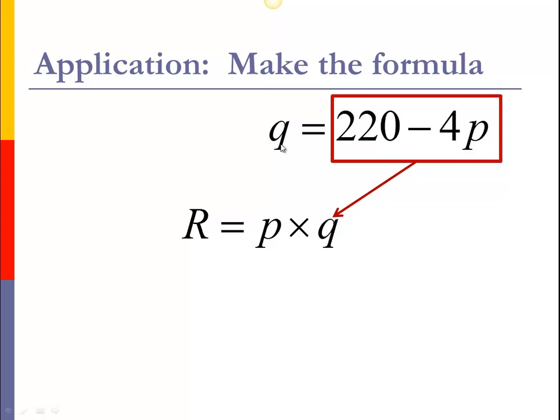Well that's easy to do, because we've got a nice formula in our demand for Q equals, which means wherever I see a Q in another formula, we can put 220 minus 4P. And that's what I do, so I replace this Q with the 220 minus 4P.